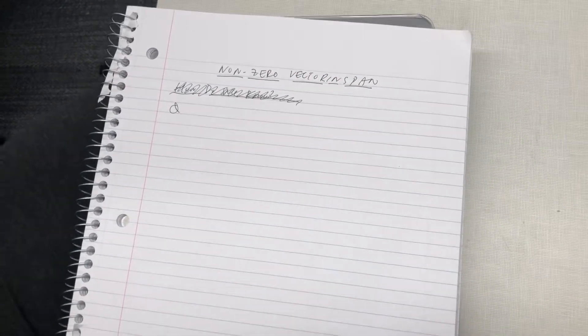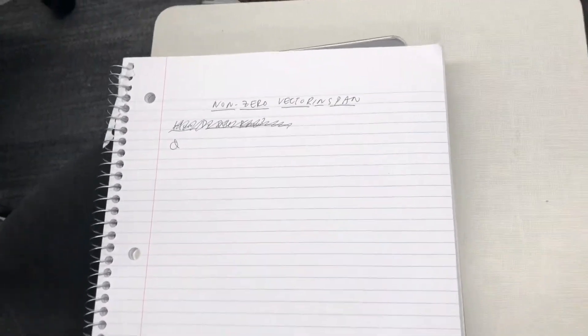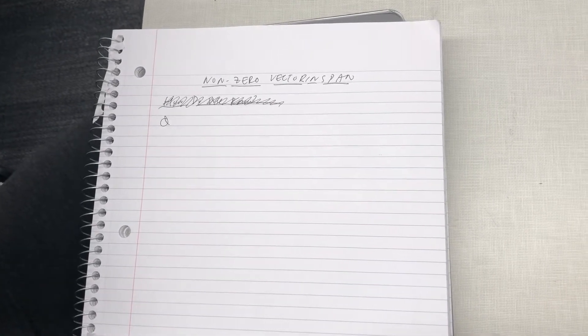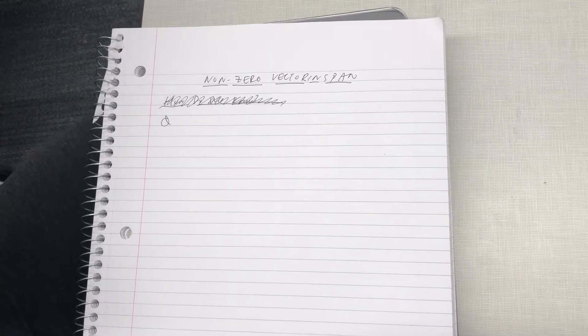So our group was tasked with proving that a non-zero vector is in a span. So how do we know what a span is? In general, the set of solutions to a homogeneous system can be expressed as a span, where p is the number of free variables.